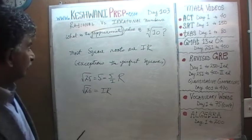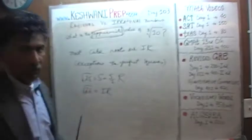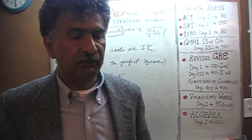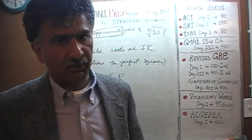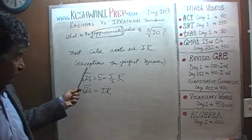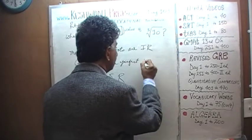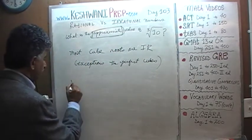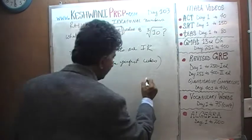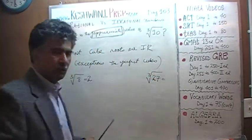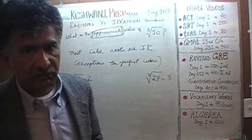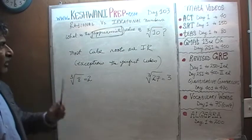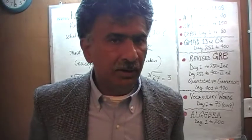The same exact thing is true about most cube roots — or for that matter, any roots: fourth root, fifth root, seventh root. Unless it happens to be a perfect cube or a perfect fourth power or a perfect fifth power, it will be an irrational number. Most cube roots are irrational unless they happen to be perfect cubes. For example, the cube root of 8 is 2 — that's rational. Similarly, the cube root of 27 is 3, because 3×3=9 and 9×3=27. But anything in between — cube root of 9, 10, 13, 17, 26 — they are all irrational numbers. If you were to write them in decimal form, they will never end and there will not be any pattern.